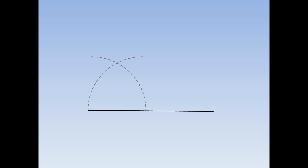Finally, with your ruler, join up the line and the place where the quarter circles cross over each other. This is an equilateral triangle.